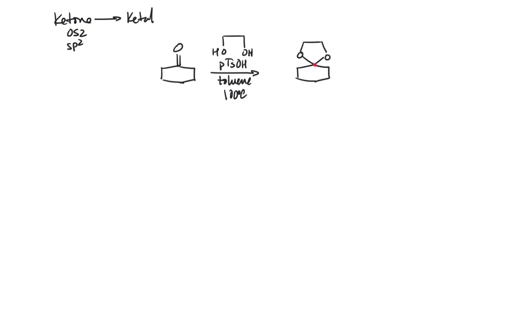It's being transformed into an sp3 hybridized carbon that is still at oxidation state 2. What you're looking at is the formation of a 1, 2, 3, 4, 5-membered ring where 4 of those atoms are coming from the ethylene glycol.